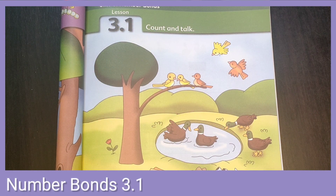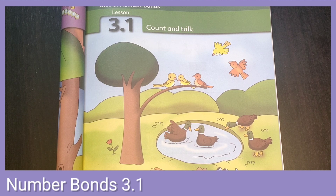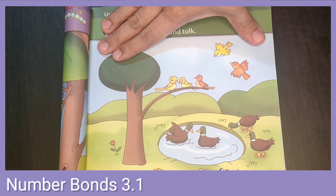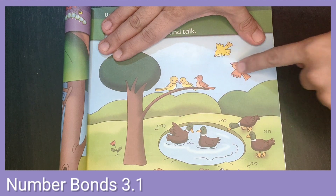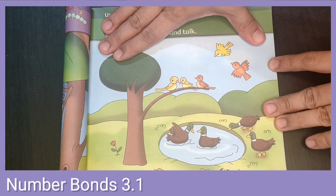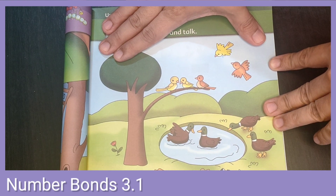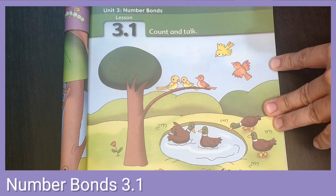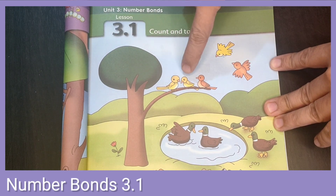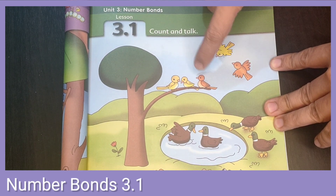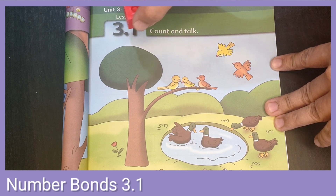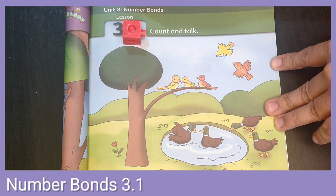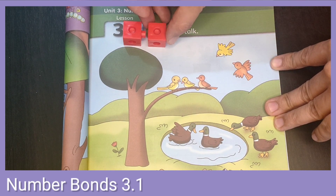Let's take a look at the picture on our textbook on page 33. On this page we see some birds. How many birds are sitting on a branch? One, two, three. Let's put three blocks to represent those birds.